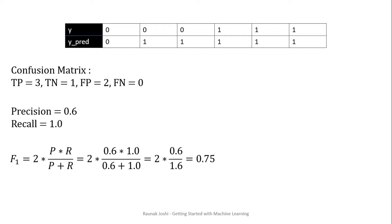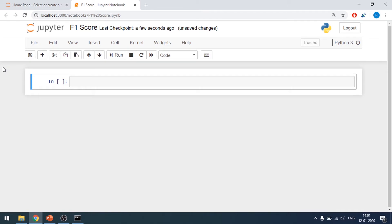So 75 is the accuracy score of our model, meaning 75 percent of the time our testing data is going to be accurate. Now let us move on with the Python implementation. I'll be starting right from scratch — I don't want you to get caught up with logistic regression. So I'll make the data first.